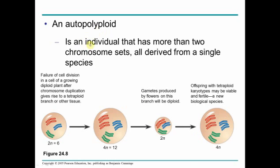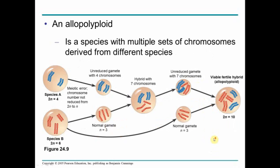Autopolyploids are individuals that have more than two chromosome sets, and they all came from a single species. So where 2n equals 6, there's some failure during meiosis, and in this case 4n equals 12. Gametes produced by flowers in this branch will be diploid, and the offspring are tetraploid again — they have four copies of every chromosome. Essentially they are 4n, tetraploid, and this is the adult variation of that plant.